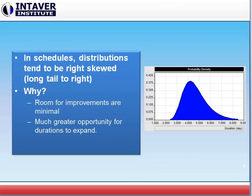Now one of the things that I did mention is that in schedules distributions tend to be right skewed, and that means they have a long tail to the right. The reason for this is that there is minimal room for improvement. That means if we have an activity that's supposed to take us five days, we could probably improve quite a bit on that. We might be able to finish it in three days if everything goes absolutely perfectly.